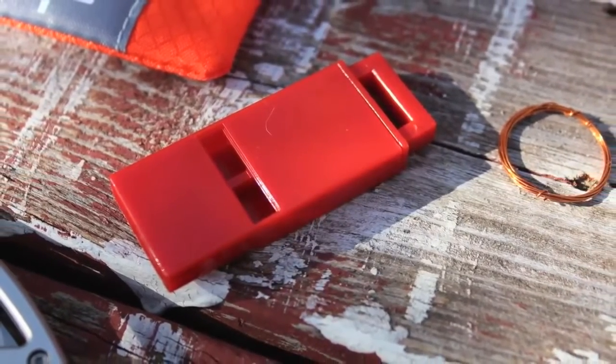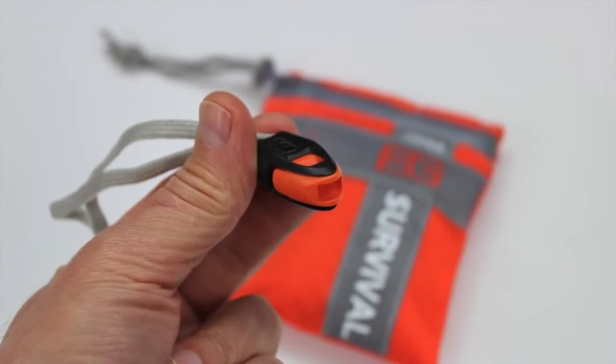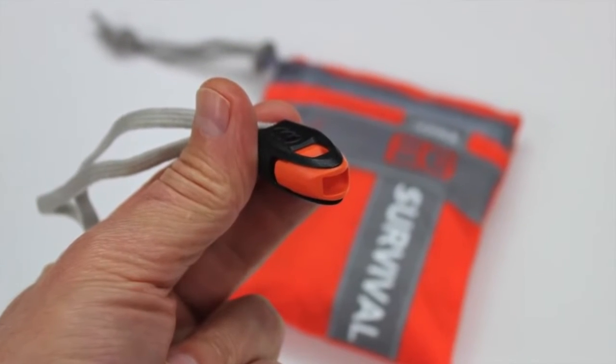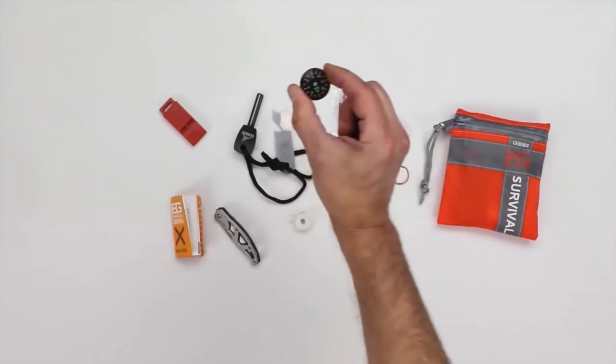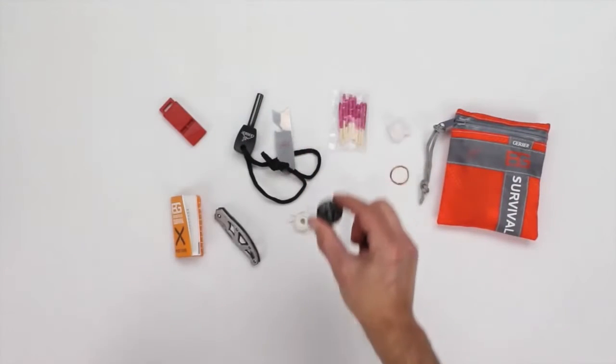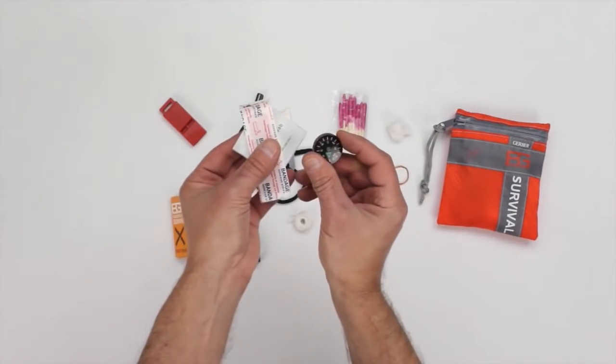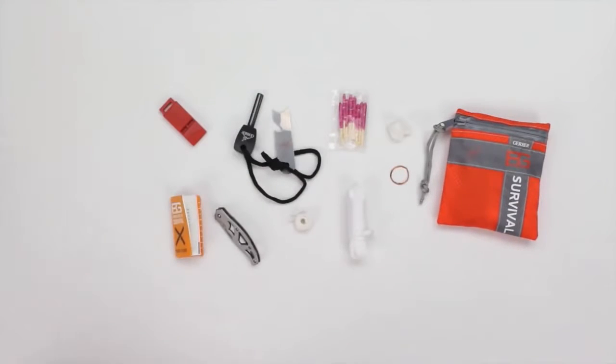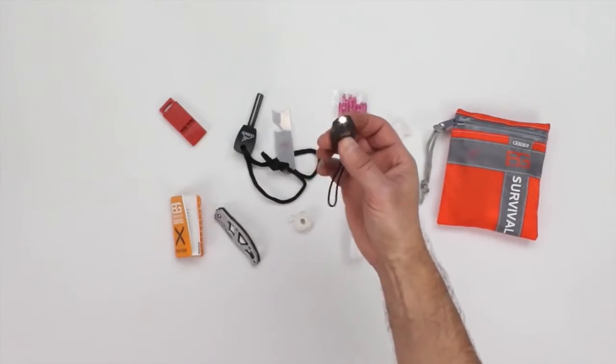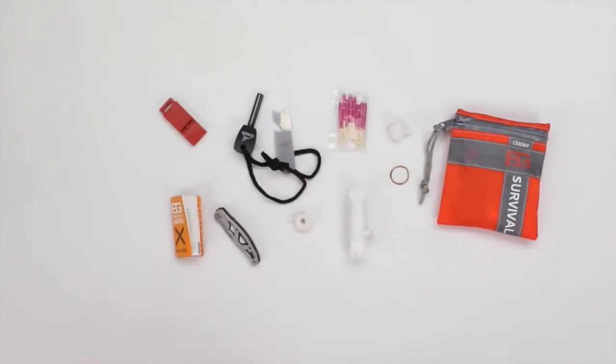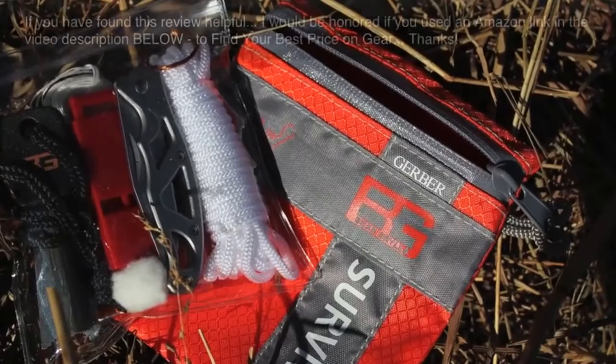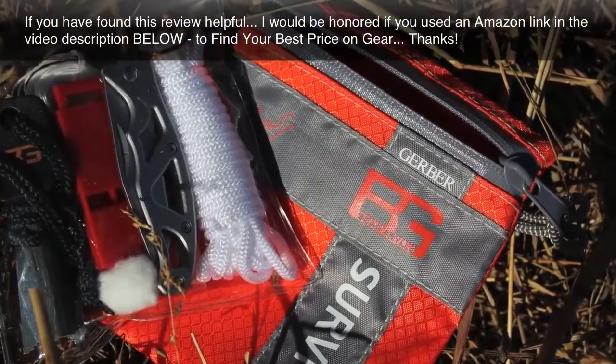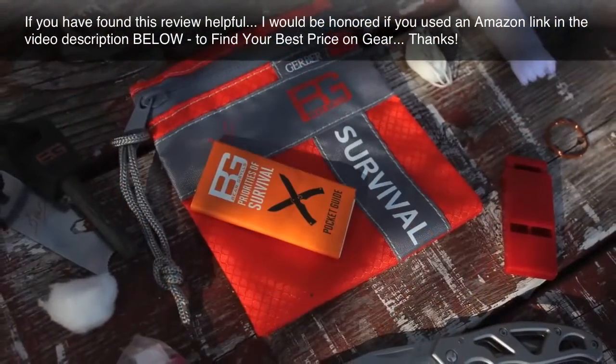It would be nice to see the Bear Grylls emergency whistle replace it in future versions of this kit. Plus, this kit really needs to have a button compass and a few first aid items added by Gerber to be a more complete starter survival kit. A mini LED flashlight would have been a really nice touch, although we know this probably would have raised the cost a bit. Regardless, the Bear Grylls Basic Survival Kit is a helpful, compact collection of gear and a decent start or supplement to a more comprehensive emergency kit.